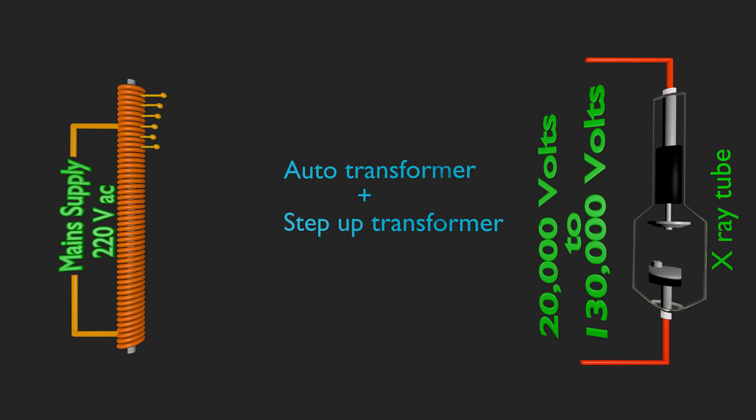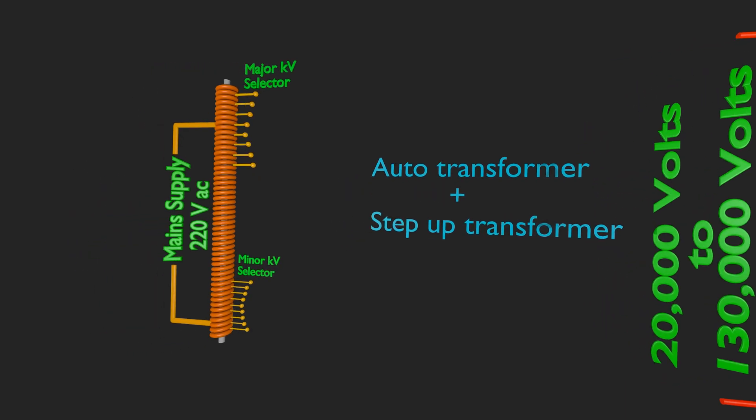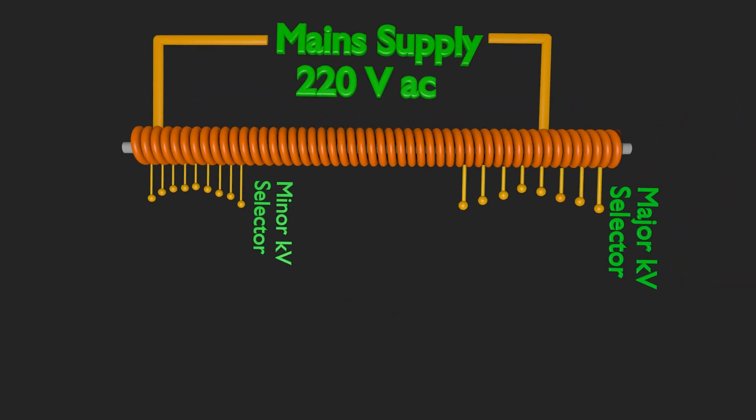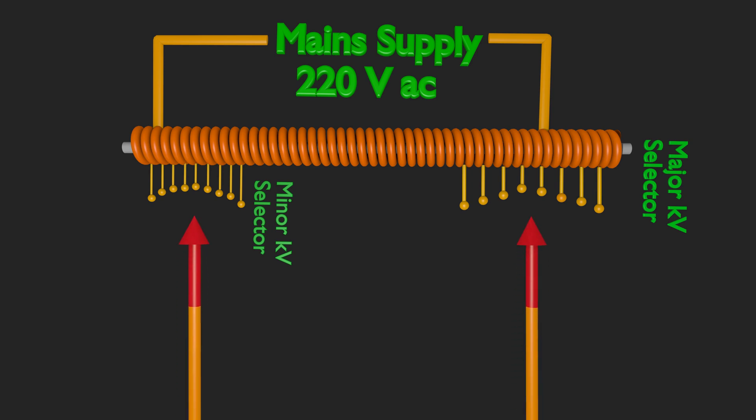But the secondary section have different taping points to have variable turns. As the taping point changes, the ratio of turns in secondary to primary changes.